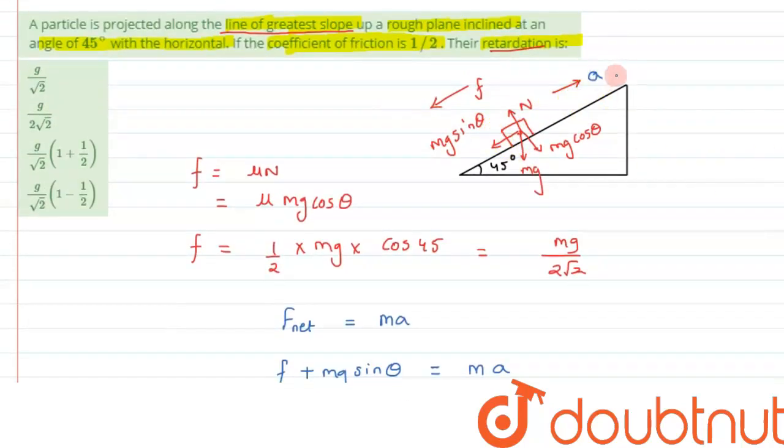So this is the value of acceleration we are getting. Actually, as we can see over here, as the body is moving up with acceleration a, this is not—to call it an acceleration is not correct.